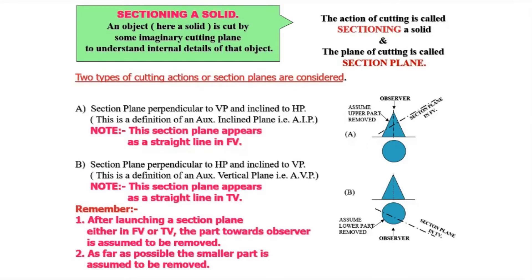Sectioning of a solid is simply cutting a solid using some imaginary cutting plane. This is done to understand the internal details of that object. You can consider it like this: the solid is made of wood and you are cutting it using a hacksaw. In that case, two additional cut surfaces will be made, and both surfaces will be of the same shape because one has to join with the other.